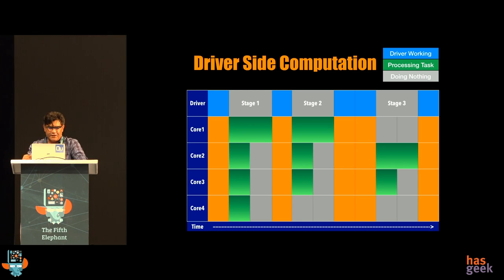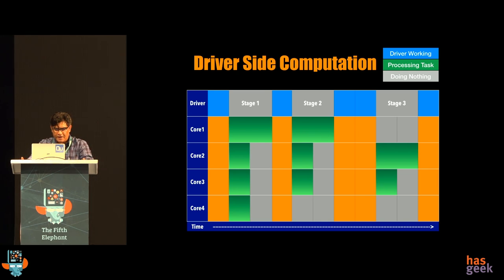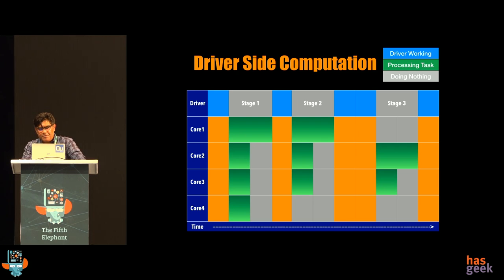The first source of waste is driver-side computation. As I said, when the driver is running, no stages are actually running. So all that orange area is covered because the driver is doing some work. For example, if you have 100 executors running and your job takes 10 minutes, and for five minutes there was some computation running on the driver, those five minutes multiply by all 100 executors — 500 minutes out of your 1,000 compute minutes are just getting wasted.